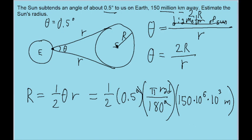So if we put this into our calculator, we find a radius of the sun, 6.545 times 10 to the power of 8 meters.